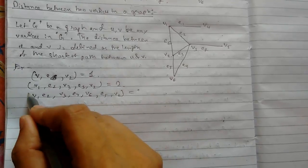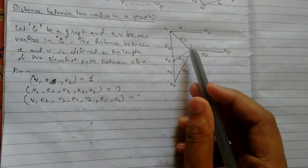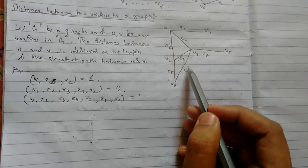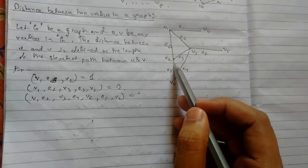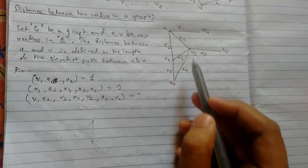Let us see what it will be. V1, e2, v3, e4, v6, e5, v2. So it will be 1, 2, 3.